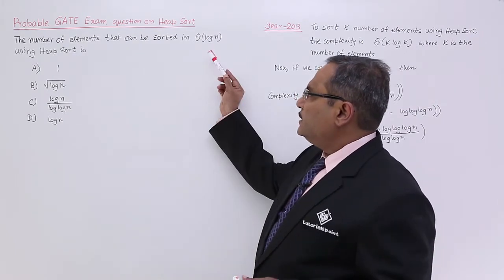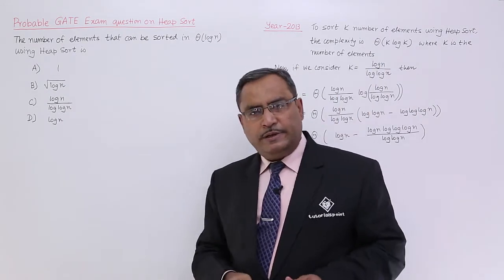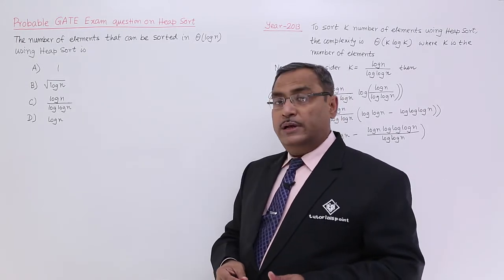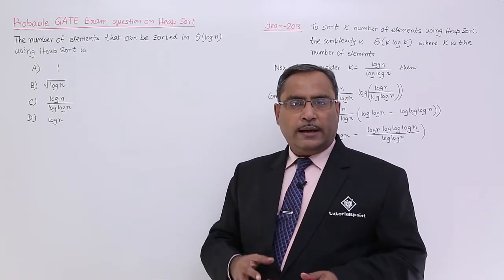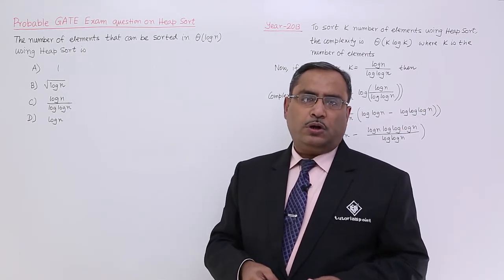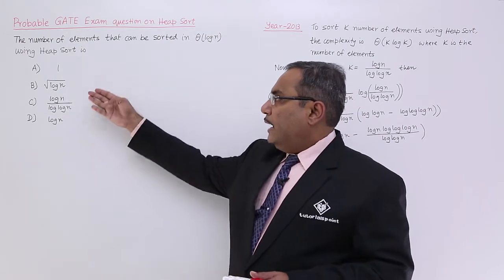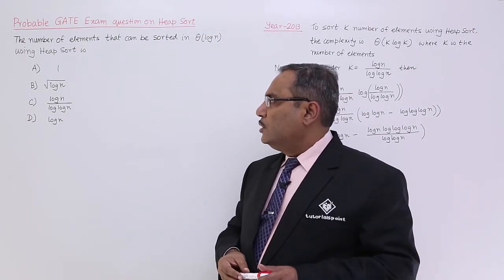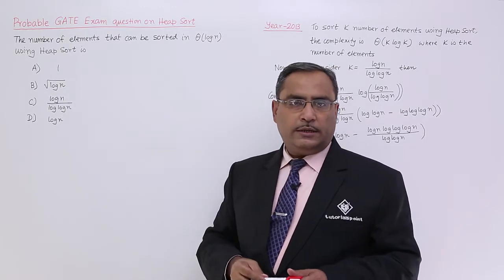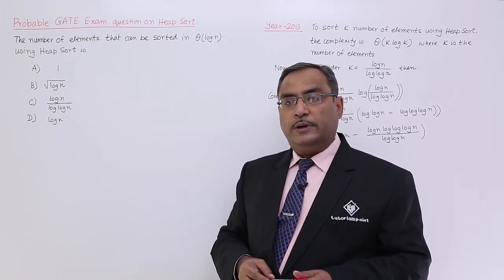that means here the sorting complexity has been given. That is big theta of log of n. And we are supposed to find out the number of elements on which this particular heap sort is to be applied. And here we are having four options. So, one, square root of log of n, and other two options are there. And we are supposed to find out which one is the correct one.